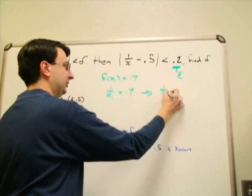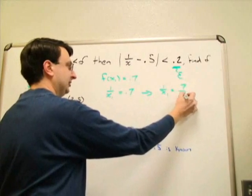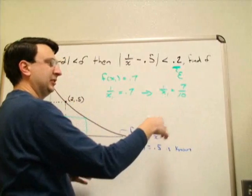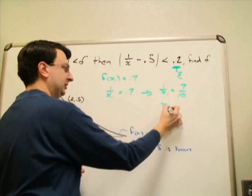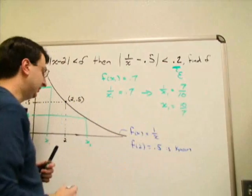I have 1/x1 equals 7 tenths, and I want to solve for x1. If I take the reciprocals, I get x1 is going to be 10/7.